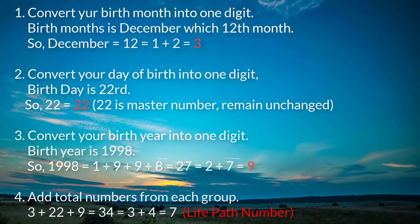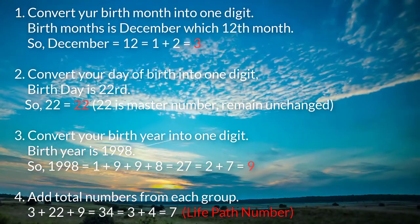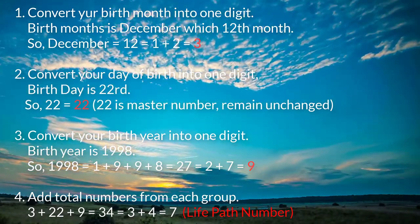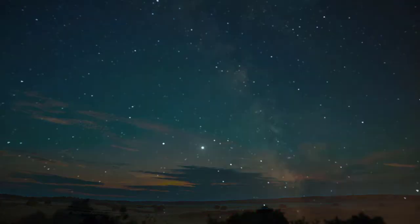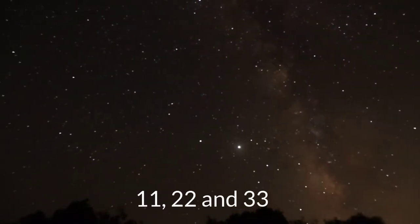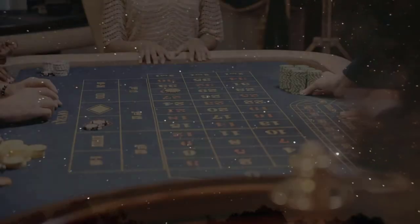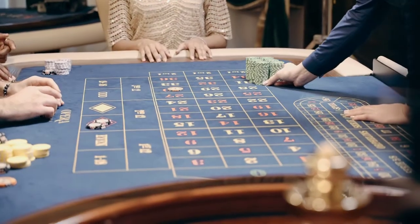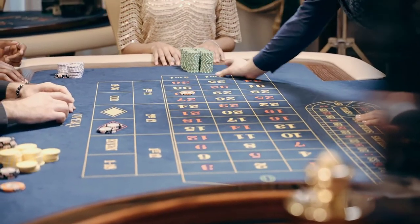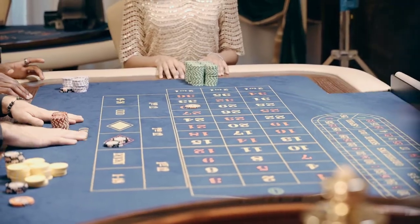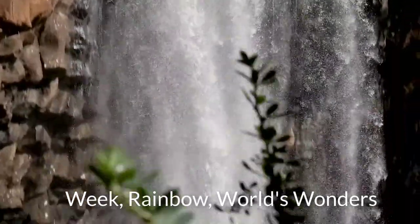Step 4: Add total numbers from each group. 3 plus 22 plus 9 equals 34, equals 3 plus 4 equals 7. So 7 is the life path number. Master numbers 11, 22, and 33 are the most influential numbers in numerology. However, because of its biblical significance, 7 is usually regarded as the luckiest number. The number 7 represents perfection and can be found in things like the week, the rainbow, and the world's wonders.